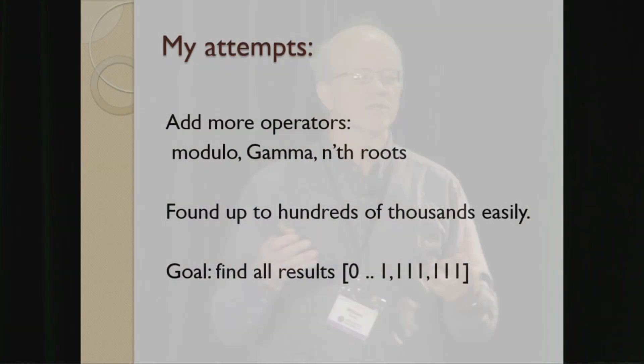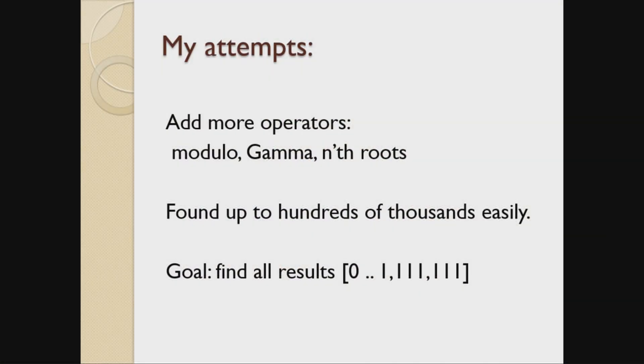I decided to use that as my starting point and see how far I could take it. I did the obvious thing — add a few more operators. Modulo seemed promising, since with factorials generating big numbers, a modulo operator is a way to bring them back down where they might be useful. Nth roots are just an extension of square roots — imagine writing a radicand symbol under the three and taking the cube root of something. And gamma just looks pretty, so I added that in. I'm doing it with a program, of course.